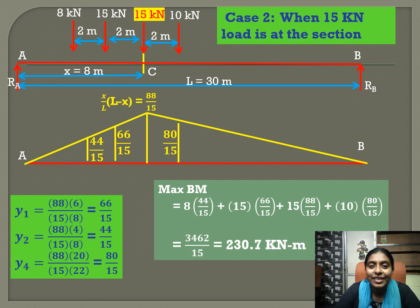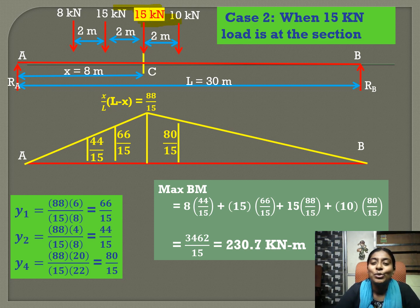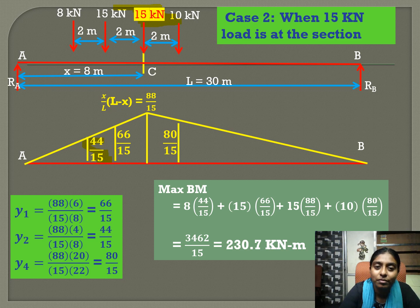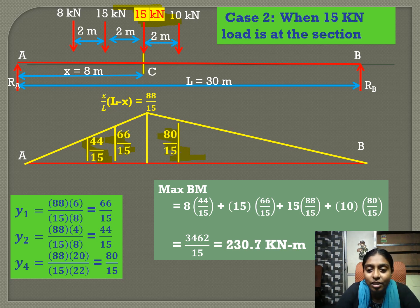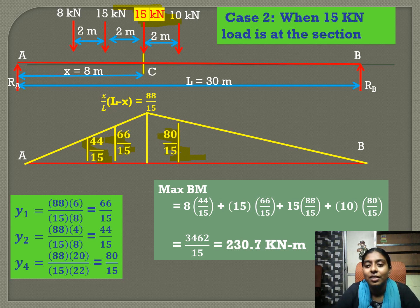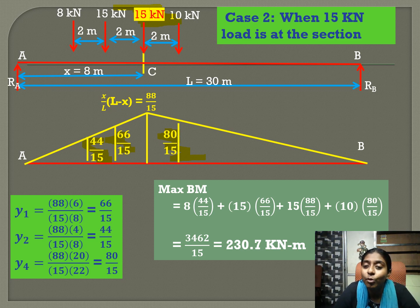Case 2: the second 15 kN load is placed at C. By finding the ordinates under the other loads using similar triangle principles, then multiplying the intensity of each load by its corresponding ordinate, the maximum bending moment is 230.7 kN·m.